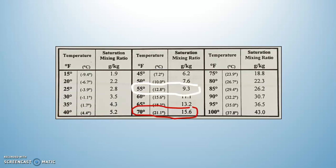Let's say we knew that the air temperature was 70 degrees and the dew point temperature was 55 degrees. Air temperature is 70 degrees, dew point temperature is 55 degrees. What is the saturation mixing ratio and what is the mixing ratio? The mixing ratio would be 9.3 because it corresponds with that 55-degree dew point temperature. And the saturation mixing ratio would be 15.6 because it corresponds with 70 degrees.